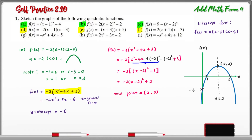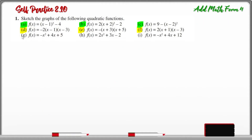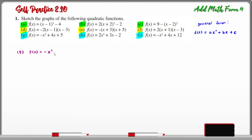By using the same method as in D, you can find the information needed to sketch the graphs for questions E and F. For questions G, H, and I, all of these quadratic functions are written in general form: f(x) = ax² + bx + c. Now let's look at question G: f(x) = -x² + 4x + 5.